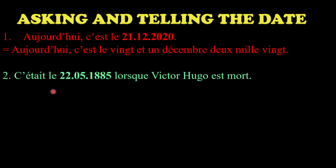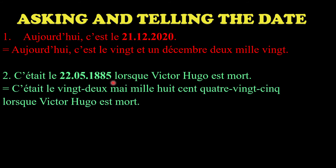Next example: 'c'était le' - this is something of the past - '22 mai 1885.' Victor Hugo was a famous French writer and poet, and this is the day he died. So you write 'c'était le 22 mai' then the year: the thousands is 'mille', the hundreds 800 is 'huit cent', and the last two digits 85 is 'quatre-vingt-cinq' - giving 'mille huit cent quatre-vingt-cinq.'